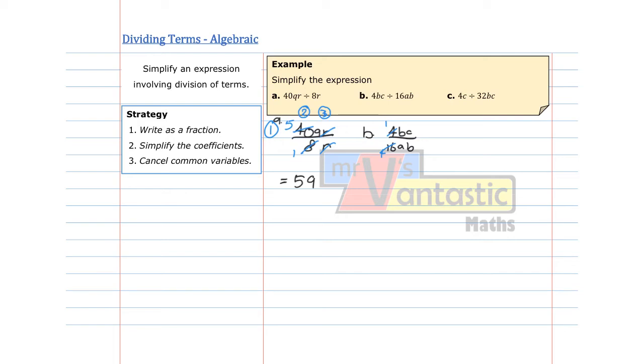And then look at my variables. I've got BC and AB. They have common variables of B in both. So we can remove the B, cancel the B's. And we are going to be left with 1C, which is the same as just C, divided by 4A. And that's its simplified form.